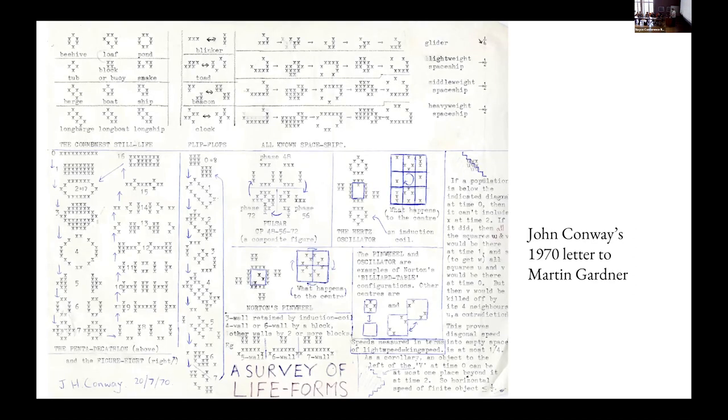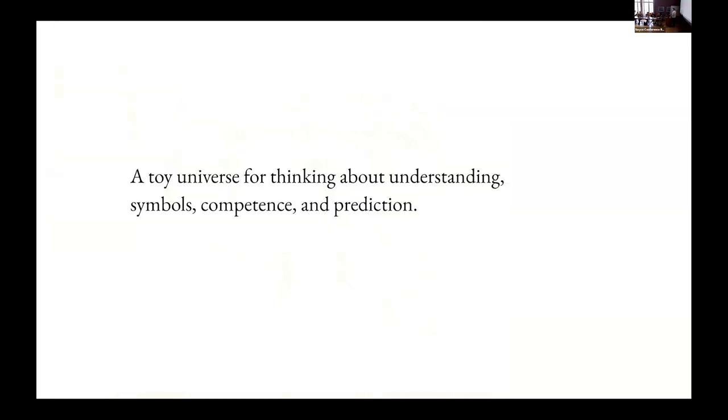So I want to ground this a little bit in an example to give us maybe a cognitive tool to work with here. So Conway's Game of Life. I'm sure that you all are very familiar with it. We can think of it as a little toy universe for thinking about understanding symbols, competence, and prediction. Like here is something that many of us recognize as an object or a thing in life. It's a glider.